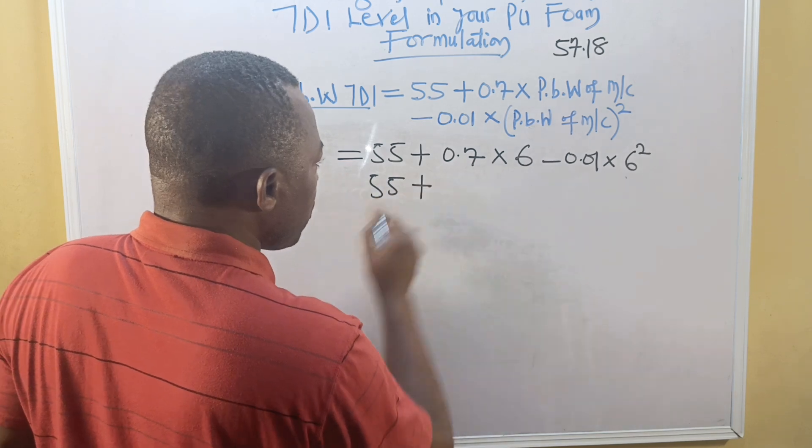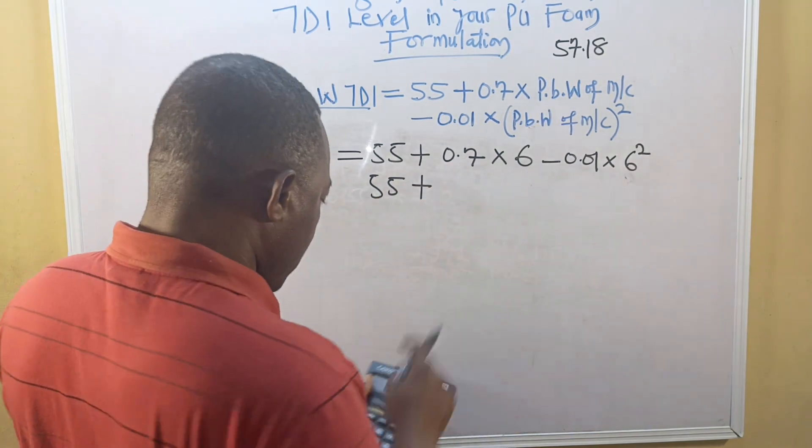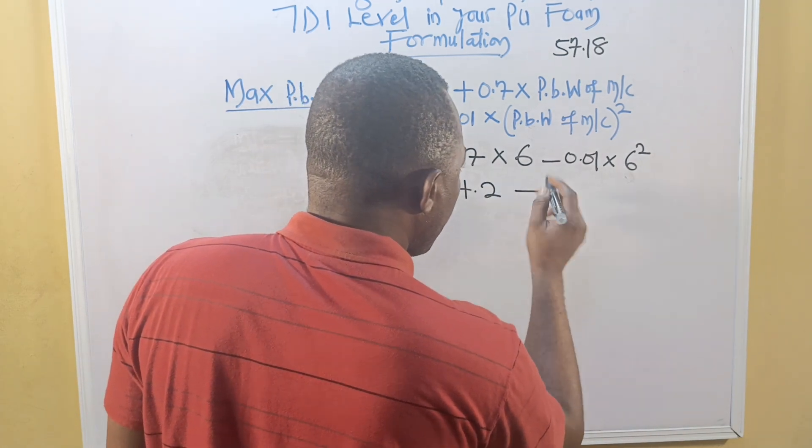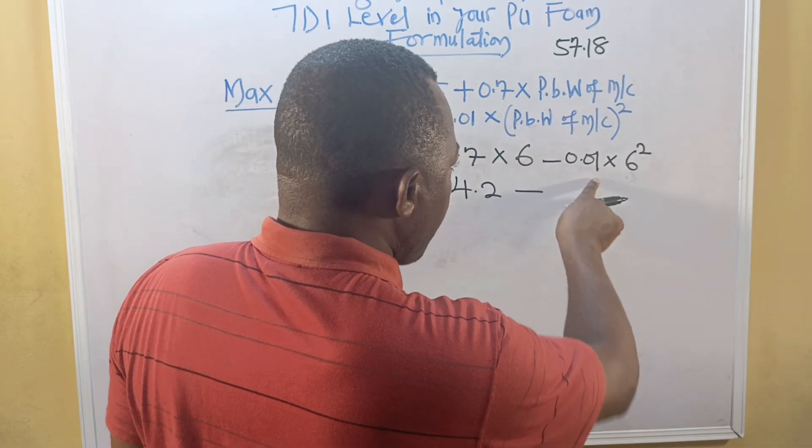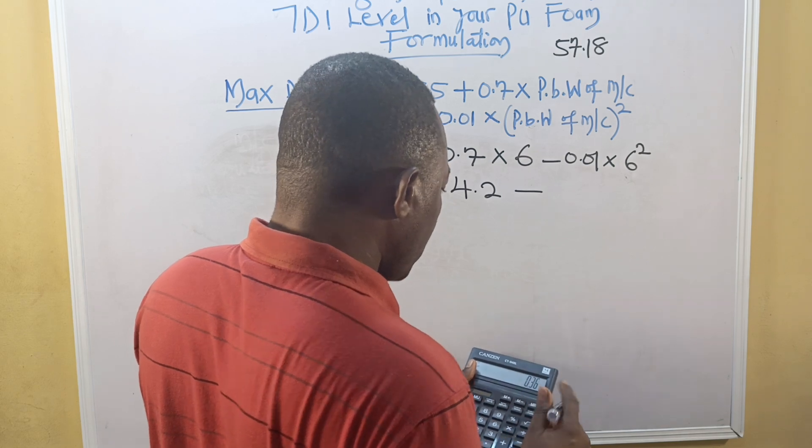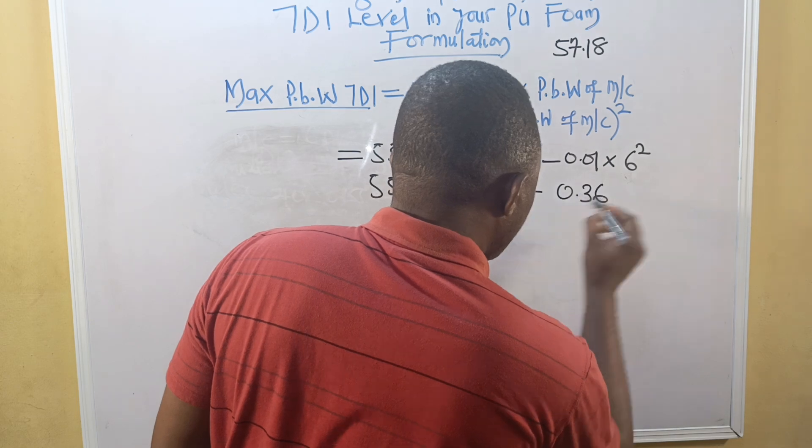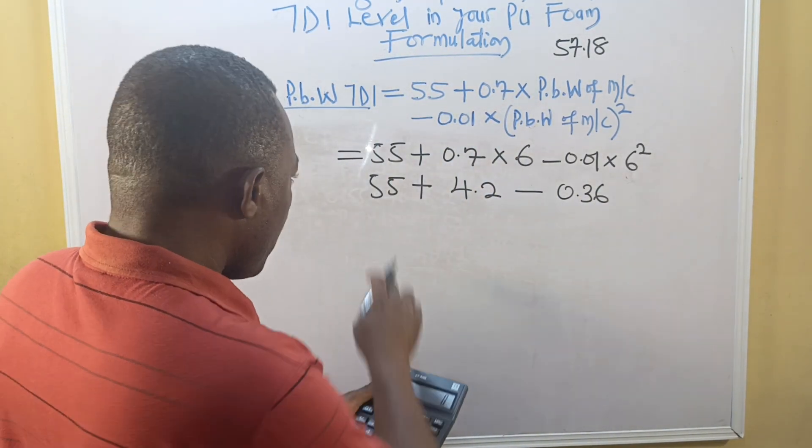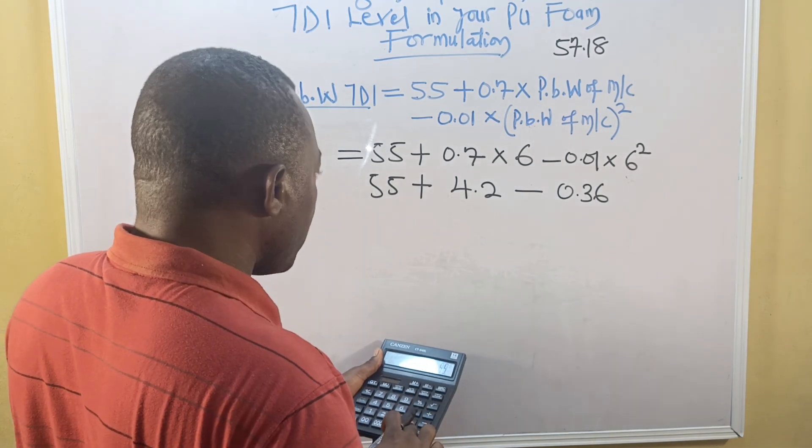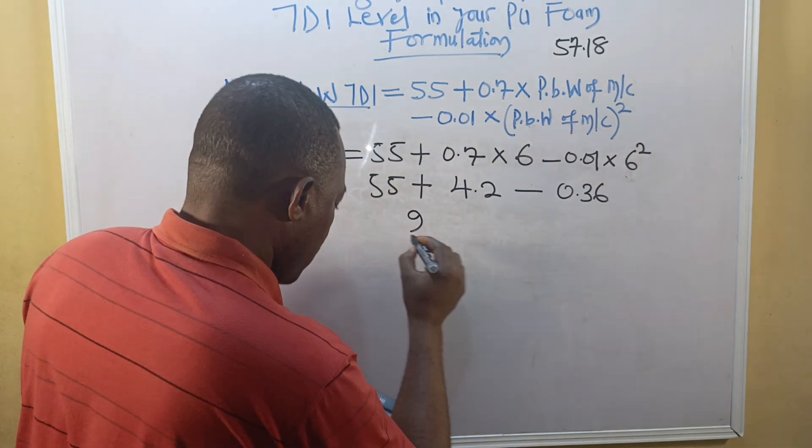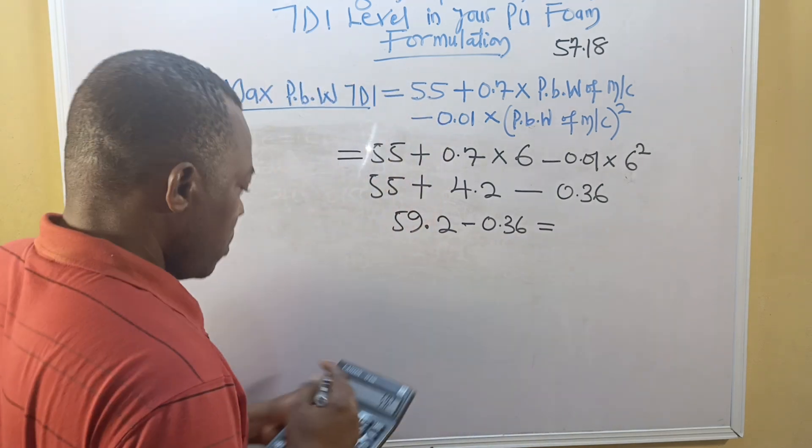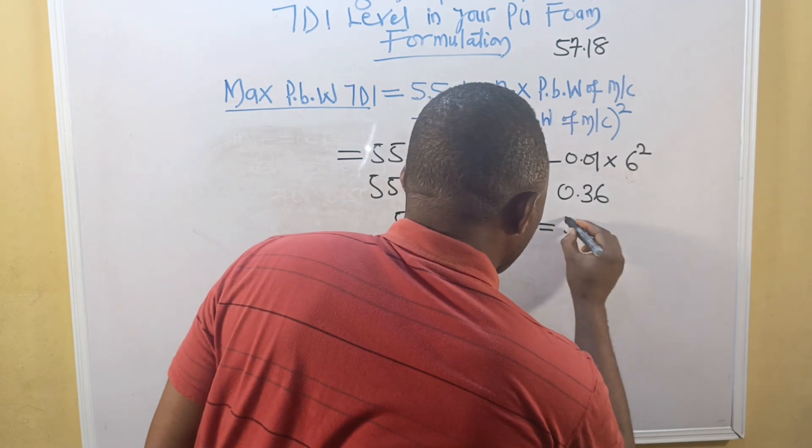The maximum TDI equation is: 55 + 0.7 times MC minus 0.01 times MC squared. So we have: 55 plus 0.7 times 6, which gives us 4.2, minus 6 times 6 equals 36, times 0.01 equals 0.36. This gives us 55 plus 4.2 equals 59.2 minus 0.36 equals 58.84.